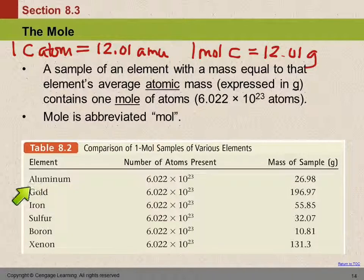So here this table compares one mole sample of several different elements. So if we have a one mole sample of aluminum, we've got 6.022 times 10 to the 23rd atoms. Just like if we had a dozen aluminum atoms, it'd be 12. A dozen of anything is 12. A mole of anything is this crazy number.